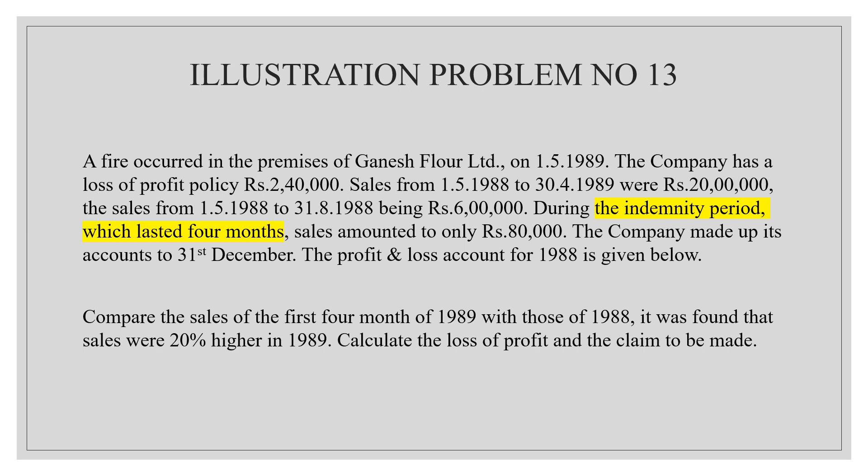Here we need to find the short sales and gross profit ratio — claim for reduction in turnover. So in the first step, that is the standard turnover. Here is the fire accident, and in the second step it takes 4 months. We have to highlight the indemnity period which lasted 4 months. We have to find sales or profit earned — that is 6 lakh — the sales from 1.5.1988 to 31.8.1988 being 6 lakh.